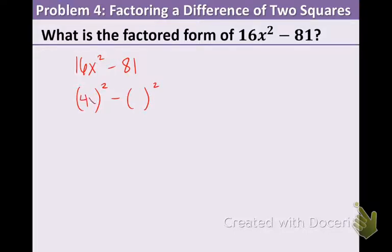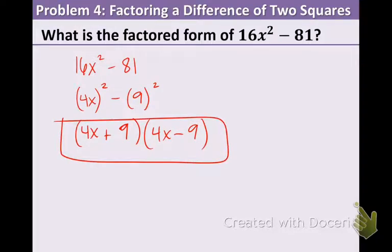So 4x times itself gives us 16x squared and 9 squared gives us 81. So now what you want to do is put 4x in the front of both set of parentheses and put the 9 in the back space of both. Put a plus and a minus and call it done. 4x plus 9 times 4x minus 9.